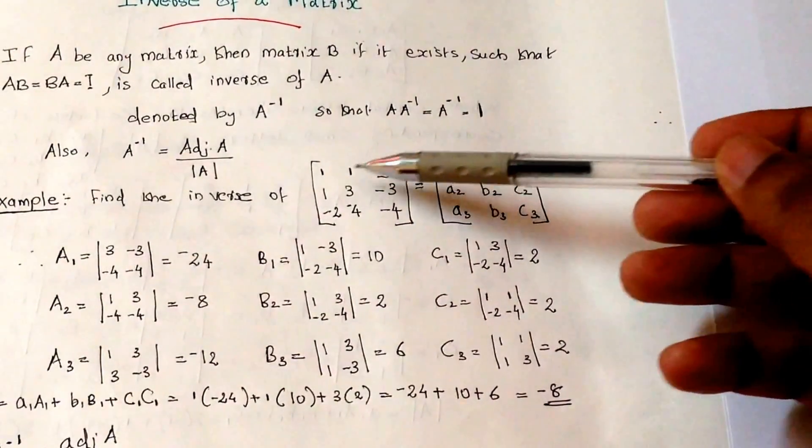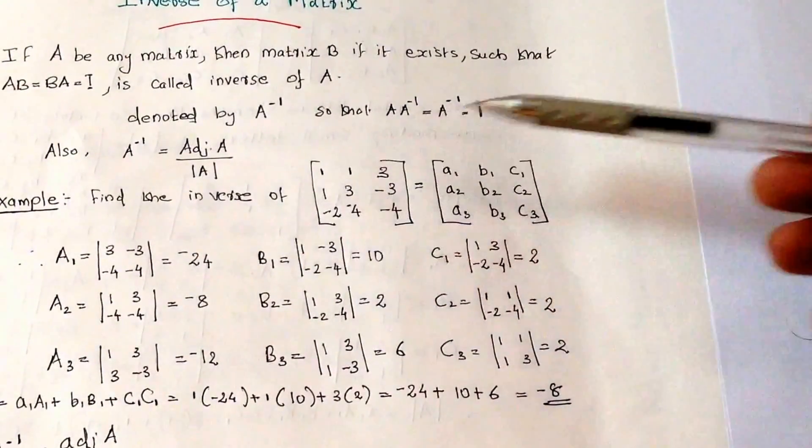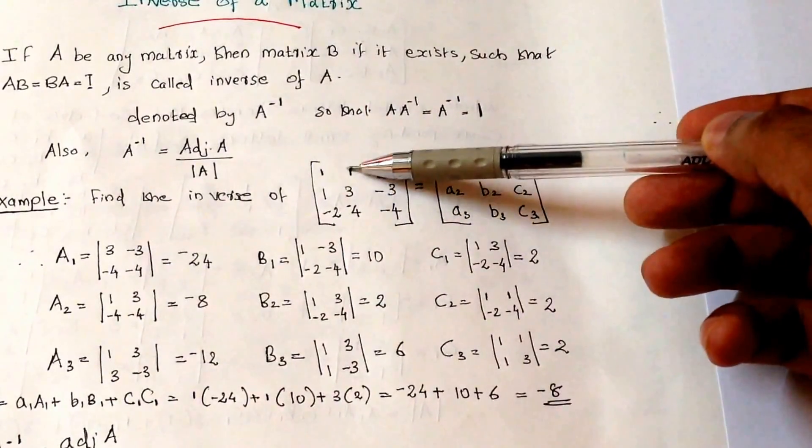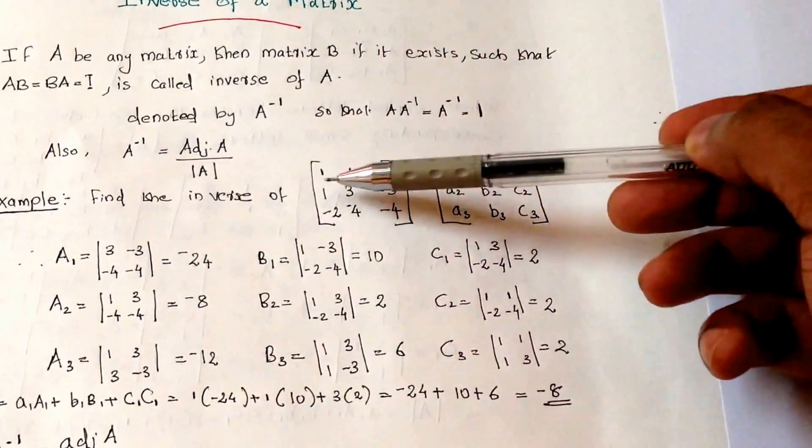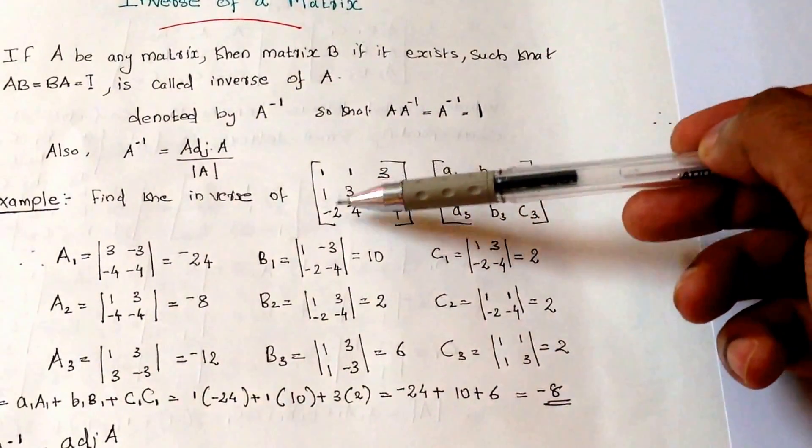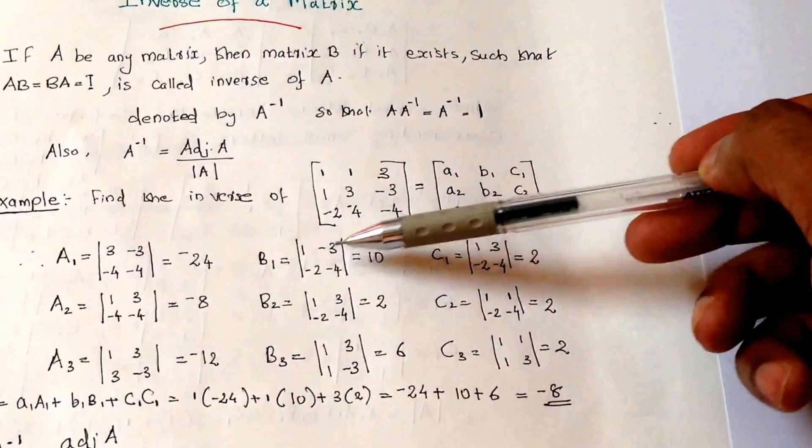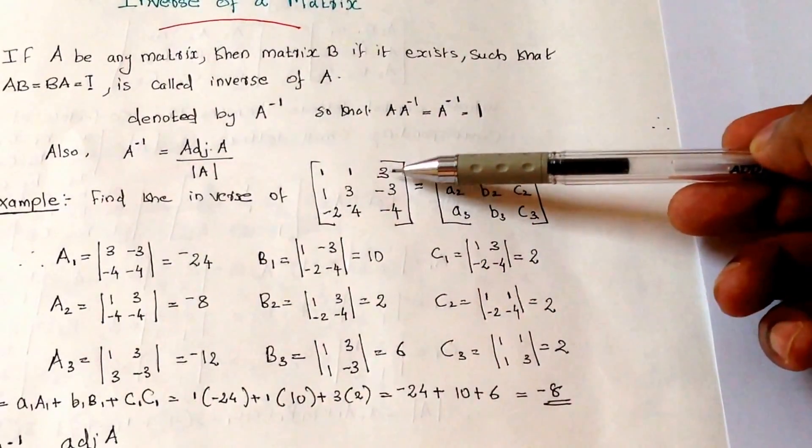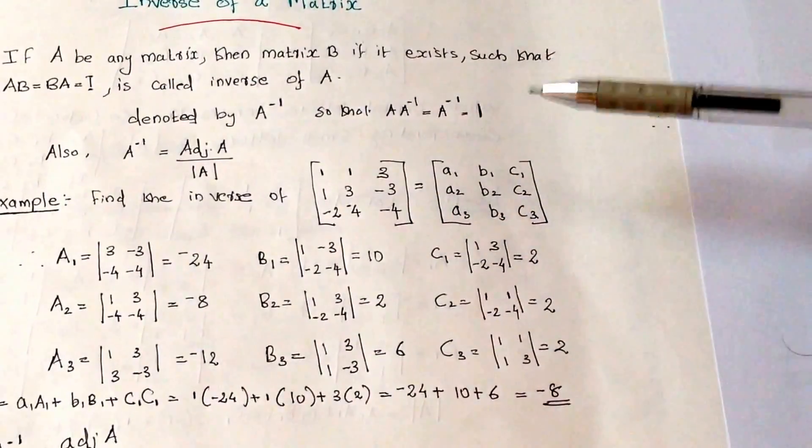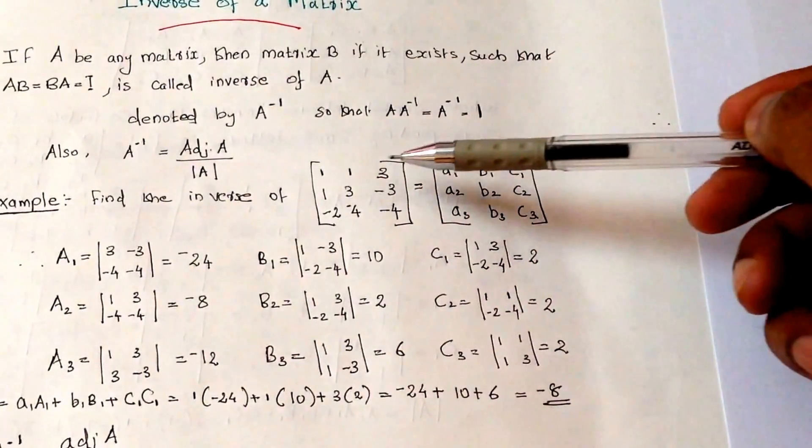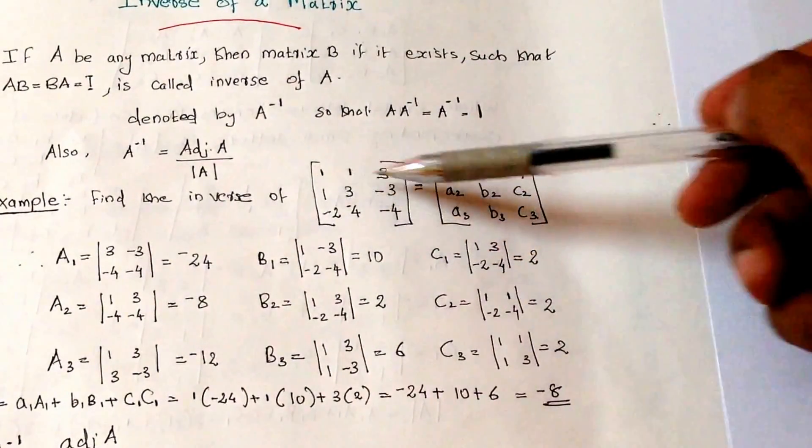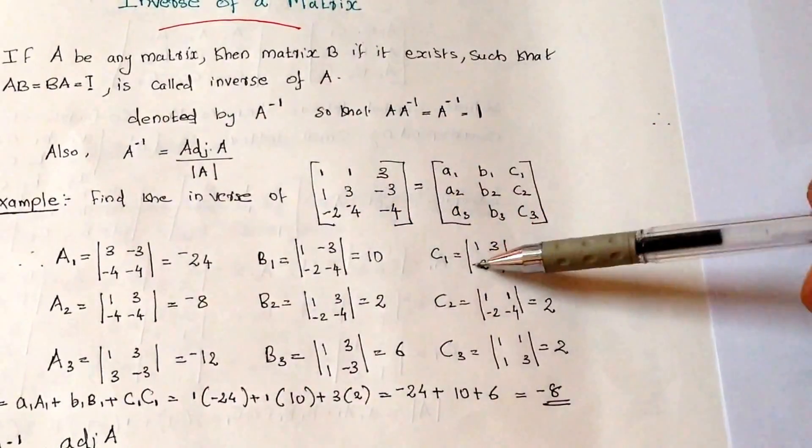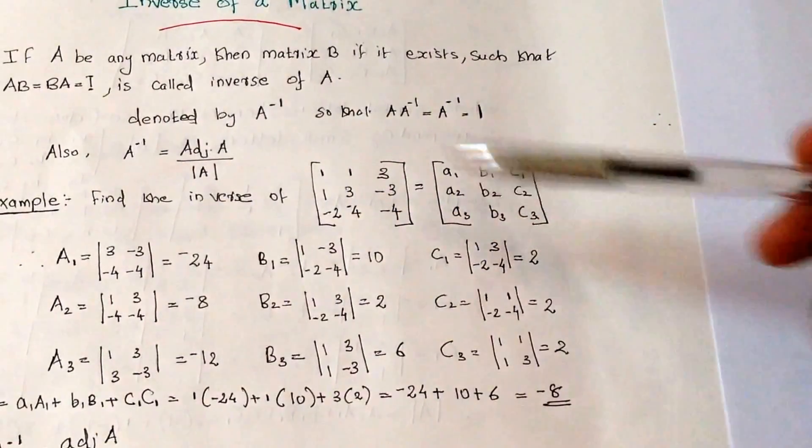Then the next value is B1. B1 is 1. You have to ignore this column and this row. It will be 1, minus 3, minus 2, minus 4. Similarly, the third one, 3. So C1 equals, this column will be ignored and this row will be 1, 3, minus 2, minus 4.